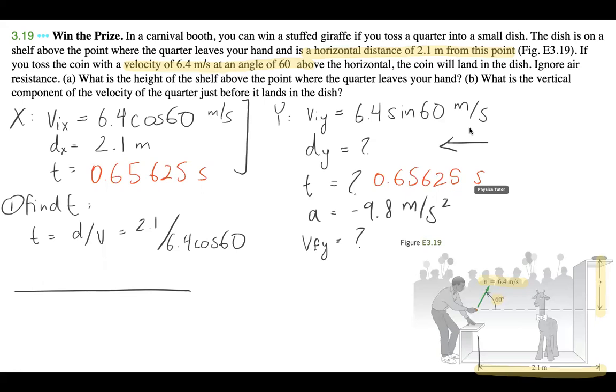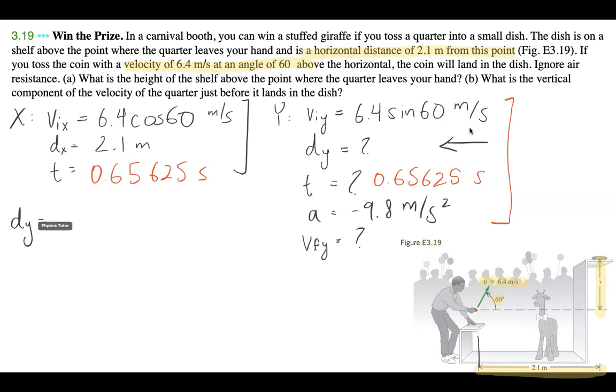And now we have our time. So note here, now we have three knowns and one unknown, right? So we only need really four, we need four parameters for each kinematic equation, right, or four variables. So the equation we're going to use is going to be dy equals viy times t plus half of a times t squared, right?